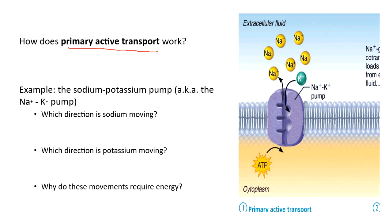In primary active transport, where did the energy come from? Primary active transport is when the energy comes from ATP.